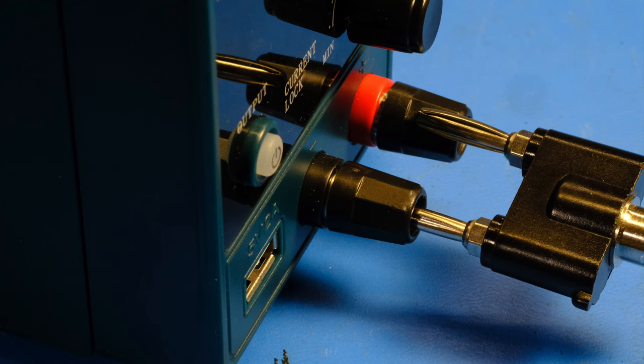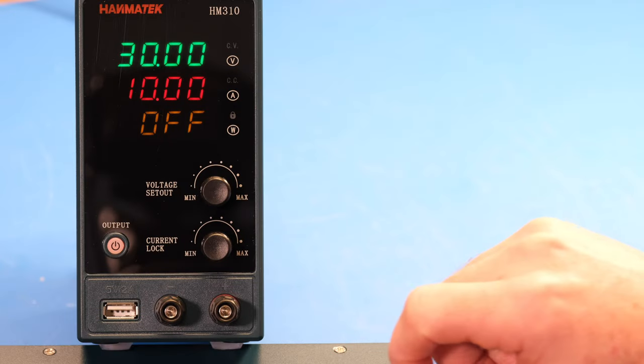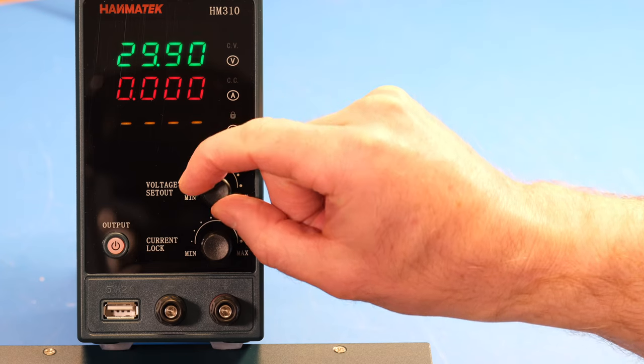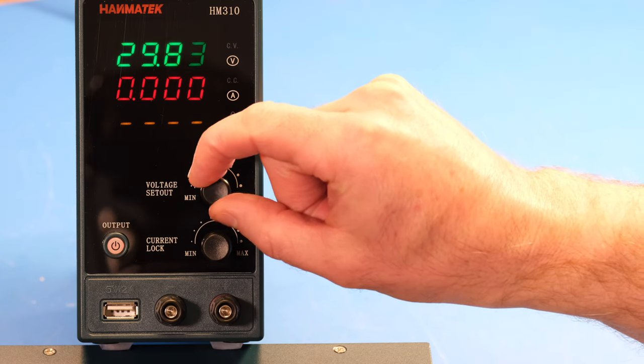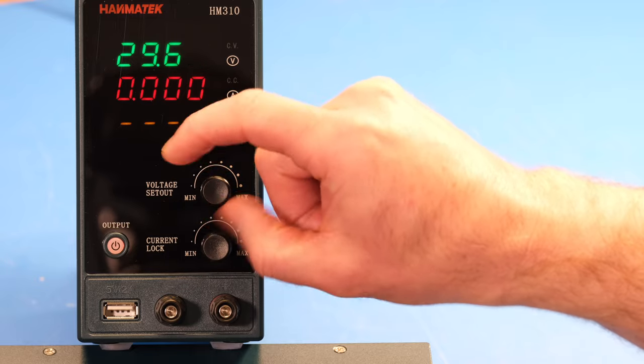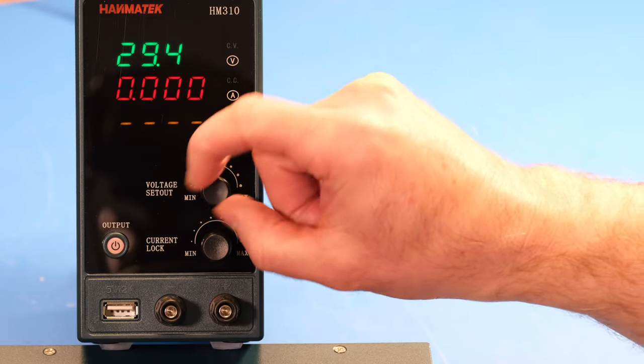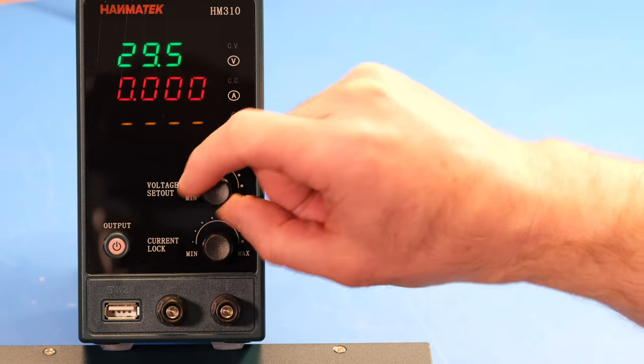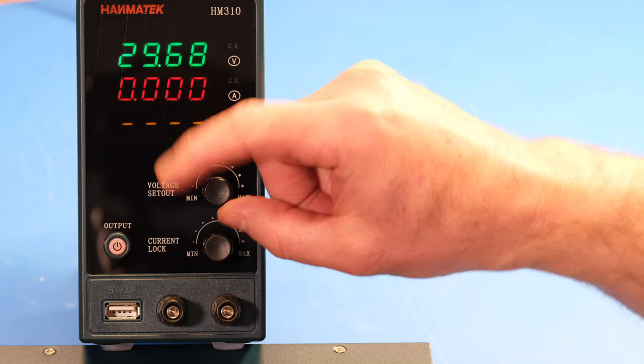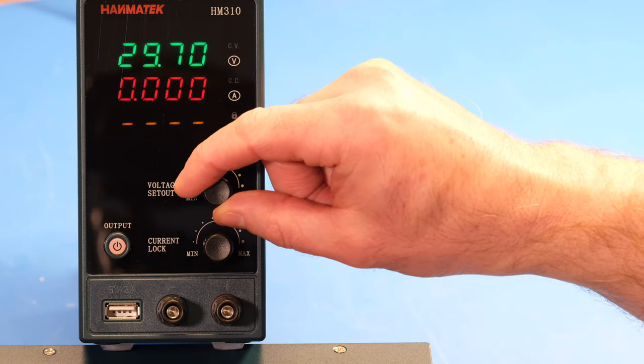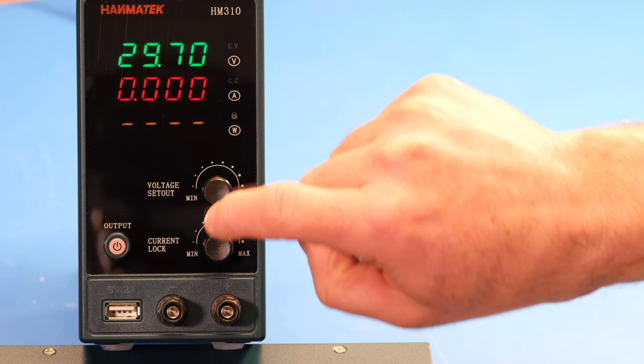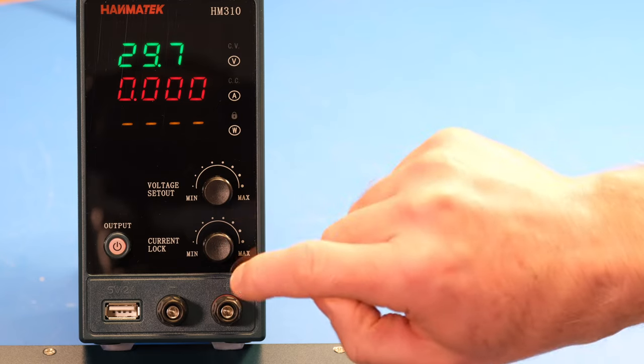To set the output voltage, you push the encoder, and you then get to change the output voltage 10 millivolts at a time. Unfortunately, the encoder doesn't really have any sort of acceleration on it, and it's actually fairly slowly responding, so you kind of have to be slow and deliberate when you adjust it. And thankfully, you can actually push multiple times, and you get to select which digit that you want to change.